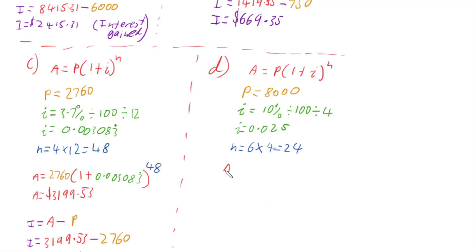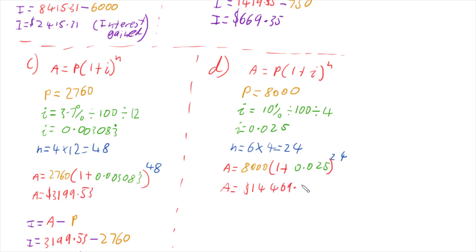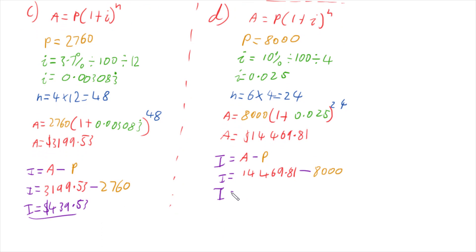Plugging our numbers in: A equals 8,000 multiplied by 1 plus 0.025 to the power of 24. Plugging that into a calculator, our final amount is $14,469.81. The interest gained is $14,469.81 minus $8,000, which gives us $6,469.81.